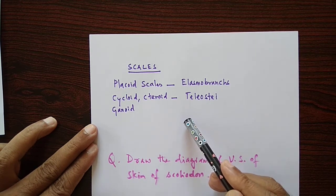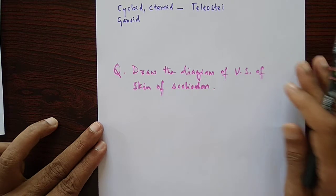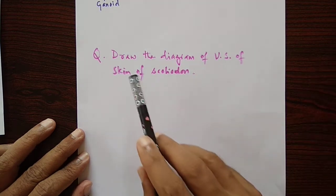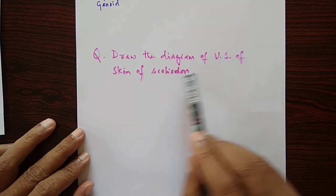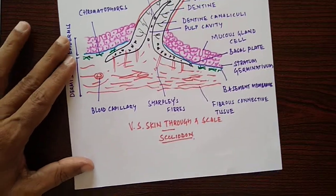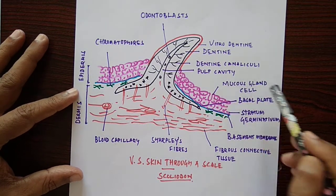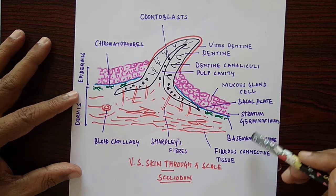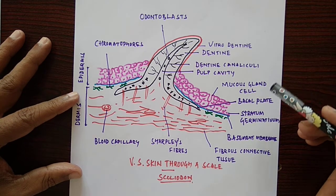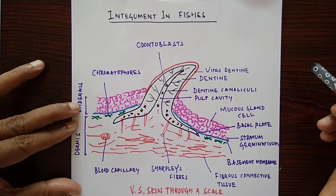So this is about the structure of integument or skin in fishes. Today's question: draw the diagram of a vertical section of the skin of Scoliodon, label it neatly, and send it to me. In the next class, I will be dealing with the structure of integument in frogs. Thank you.